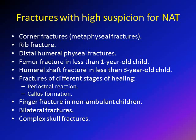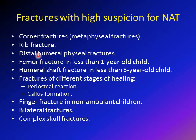Fractures associated with high suspicion for non-accidental trauma — remember these increase suspicion but are not definitive proof. The first three are associated with very high suspicion: corner fractures (metaphyseal fractures), typically of the distal femur or proximal tibia; rib fractures; and distal humeral physeal fractures. These three — corner fractures, rib fractures, and distal humeral physeal fractures — carry the highest suspicion.